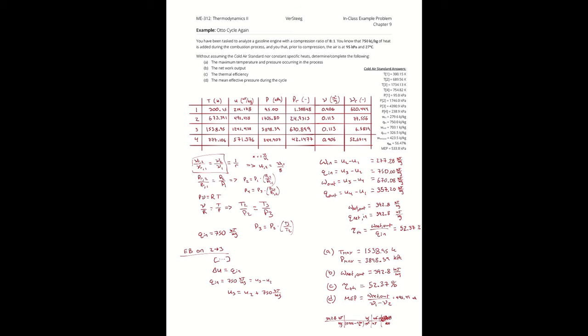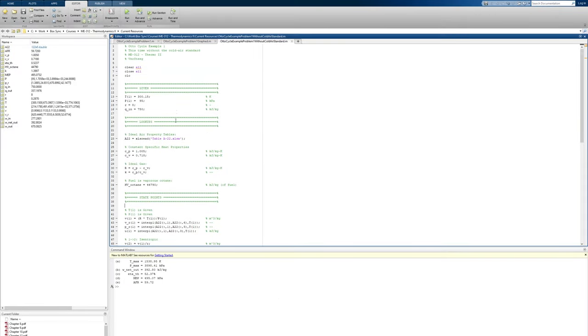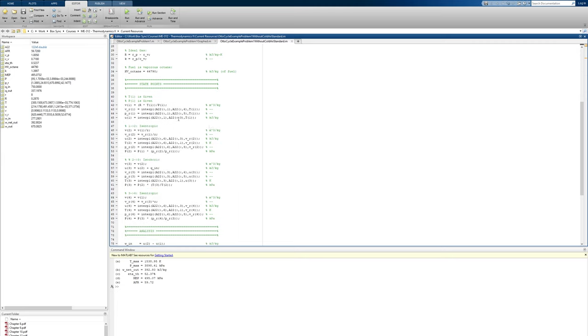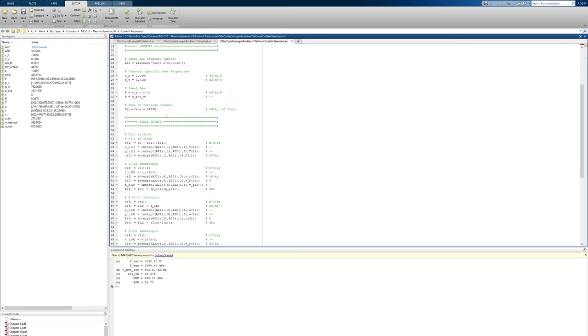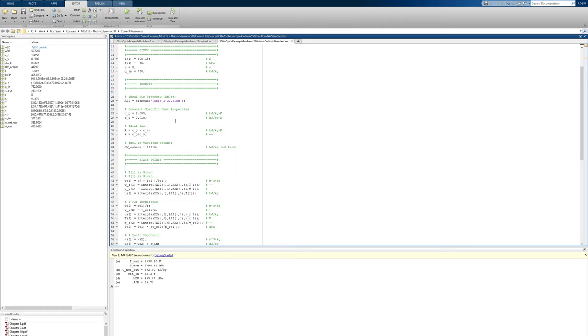And just like in the previous example I have set this up in MATLAB. Note that the given information is the same. The only real difference here is that instead of calculating the properties at state two from our isentropic ideal gas equations, I'm using the interpolation function to grab values out of table A22. By the way MATLAB's ability to interpolate is so much more convenient than calculating them by hand. Yet another massive time saver when you're completing these problems in MATLAB. With our temperature of 300.15, pressure of 95, compression ratio of 8, and a heat addition of 750 kJ per kg, we get approximately the same results as what we had gotten when we worked it by hand.